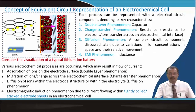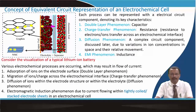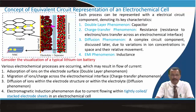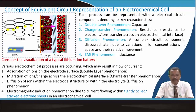Let us start with the concept of equivalent circuit representation of an electrochemical cell. In a rechargeable lithium ion battery, we have a negative electrode — usually graphite is used — which has a layered structure. The positive electrode is basically lithium nickel manganese cobalt oxide, one-third each, or slightly different compositions, where the total amount of nickel, manganese, and cobalt always sums to one. This is basically a LiMO₂ kind of layered structure.